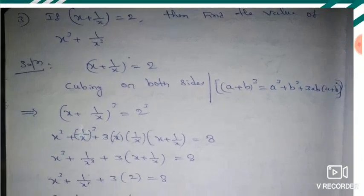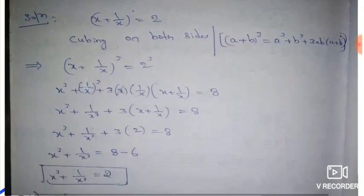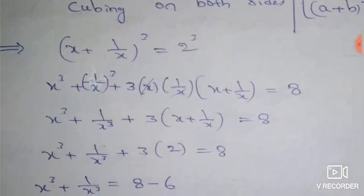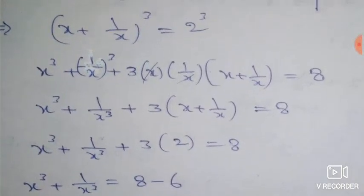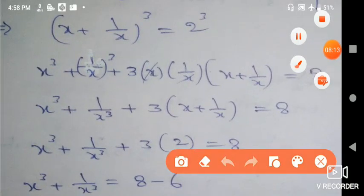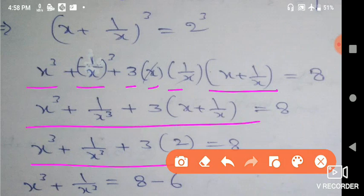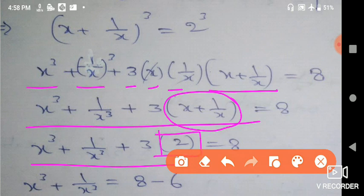On this basis, applying to the equation: in place of a, put x; in place of b, put 1/x. So after cubing, we get: a³ + b³ + 3ab(a+b). So simplifying: x³ + 1/x³ + 3 times x times 1/x times (x + 1/x). We already know x + 1/x value is 2, so 3 times 1 times 2 is 6. So 8 minus 6 gives the answer.